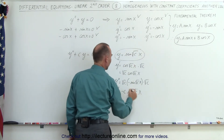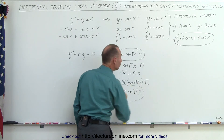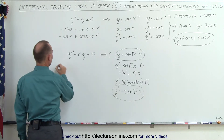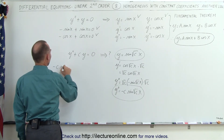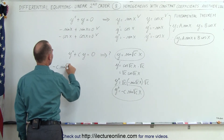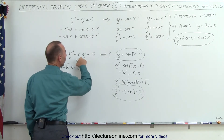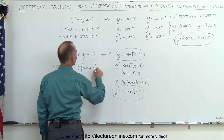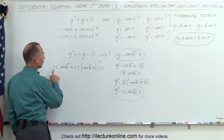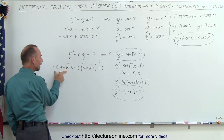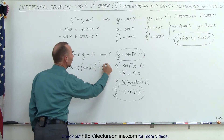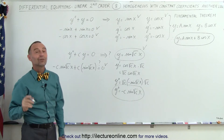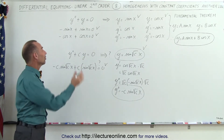Plugging y double prime and y into the original differential equation, we get minus c times sine of square root of c times x, plus c times sine of square root of c times x. By inspection, these terms are negatives of each other, so they sum to zero. This verifies that y equals sine of square root of c times x is indeed a solution.